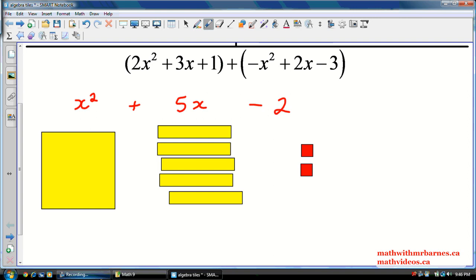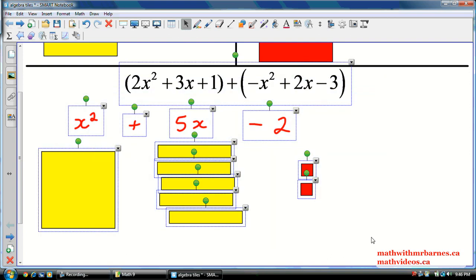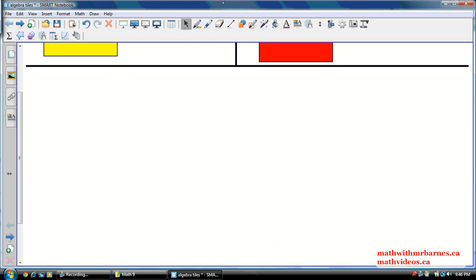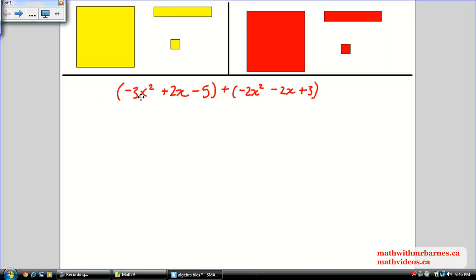Alright. Let me come up with one more example here. Let me delete this stuff. So let me just come up with one off the top of my head. Negative 3x squared plus 2x minus 5 plus negative 2x plus 3.